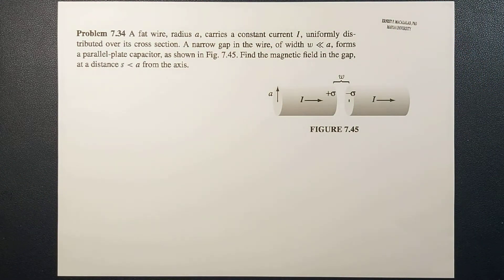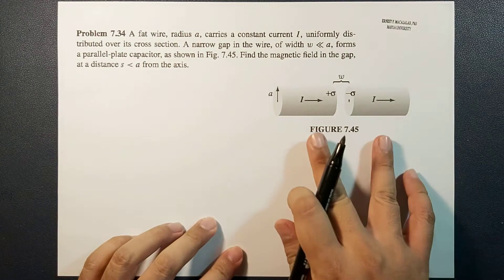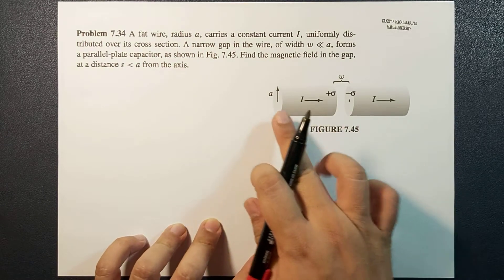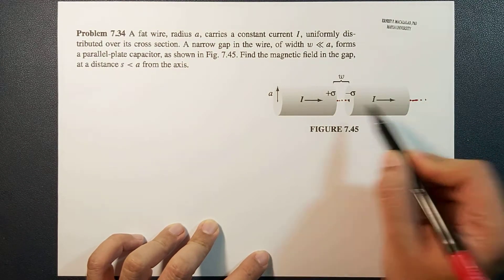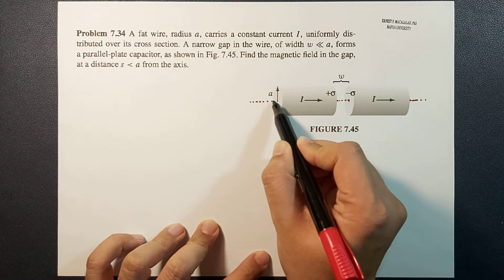Okay, so here let's first set up our problem. So this is your two fat wires of radius A. So here we're going to identify the axis. So this is your axis.